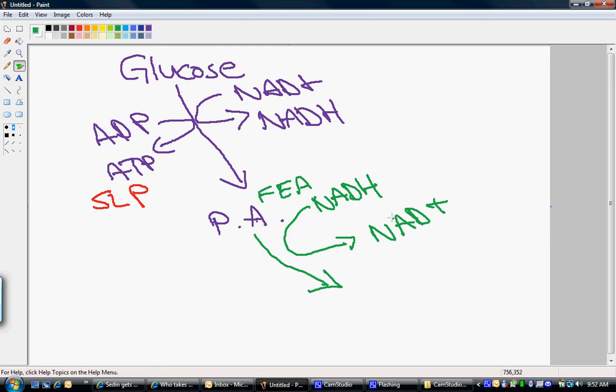Sorry, pyruvic acid becomes NAD plus, which then goes back and can now oxidize the next incoming glucose. So then this process can happen continually.